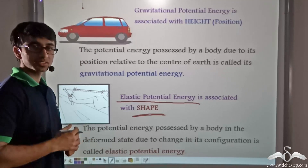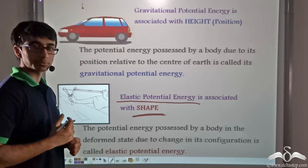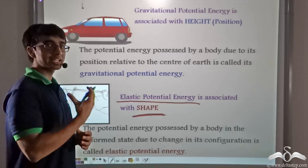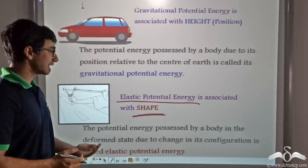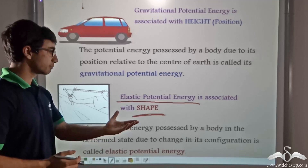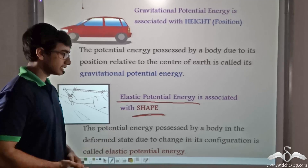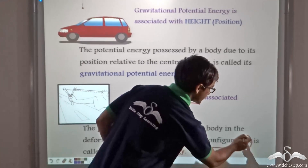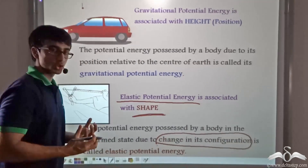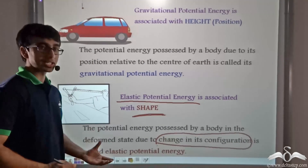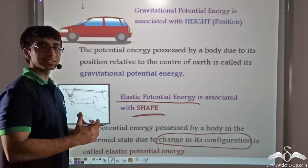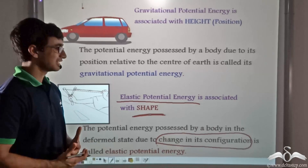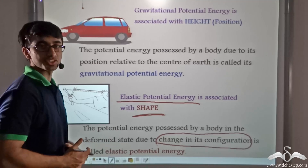Whenever we stretch the string of the catapult or the bow, it has a certain amount of potential energy. The potential energy possessed by a body in the deformed state due to a change in configuration is known as elastic potential energy. So the stretched strings of the bow and catapult had elastic potential energy.